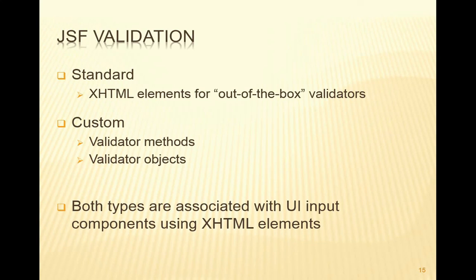After conversion has taken place, it's time to do the validation, and there are three ways. Within the standard validation we've got some out-of-the-box validators that we can use, and there are two custom validating options: one using a validator method which is in a backing bean, and the other is to use a validator object that we define in a class. Both of these are associated with UI input components because validation only checks that the string that comes in is valid, having been converted to the right type, and then if it's valid, can be used to update the component tree and then the backing bean — the model.